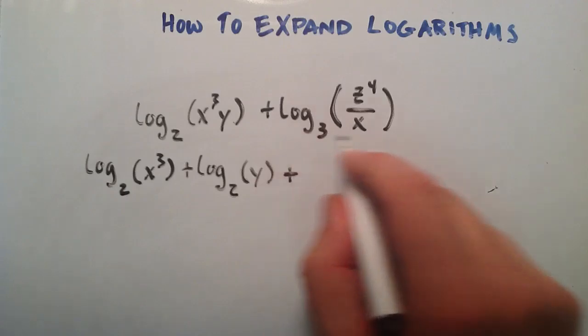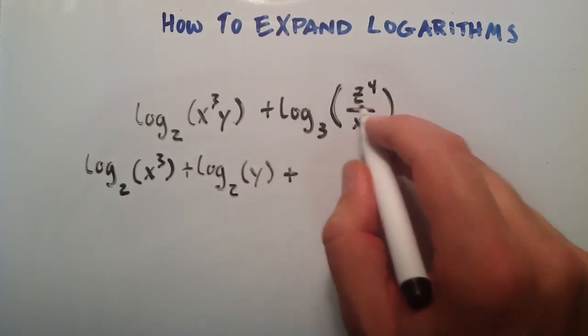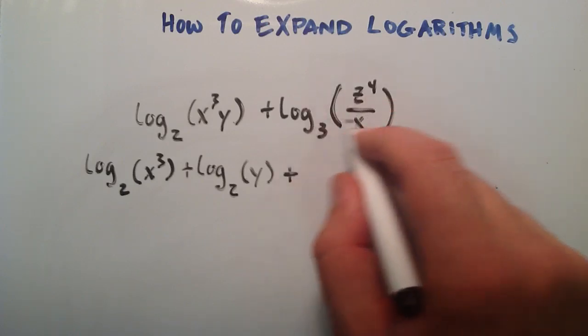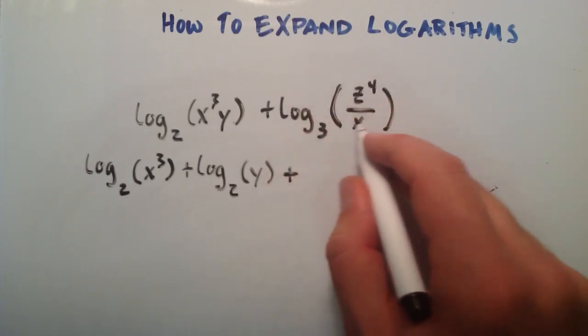And then we're going to add that to this guy right here. And this one has a fraction in its argument. And we know that when we have a fraction in the argument of the logarithm, that's equal to the logarithm of the numerator minus the logarithm of the denominator.